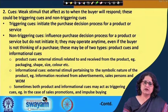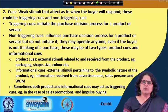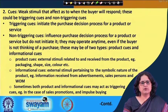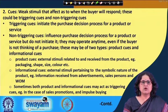Triggering cues will make a buyer react or respond immediately — they initiate the purchase process. Non-triggering cues influence the decision process at any time but will not initiate it. Product cues are external stimuli related to and received from the product — for example, the packaging, size, color, smell of the product. These are all external stimuli received by the consumer or buyer.